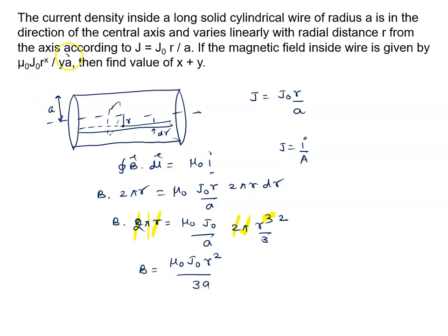Now compare with given μ₀J₀r raised to power x upon y times a. If you compare these two, I think you can easily say x is given by 2 and y is given by 3. You have to calculate x plus y. It is clearly visible to all of you. x plus y is 2 plus 3 that is 5. 5 is the final answer.